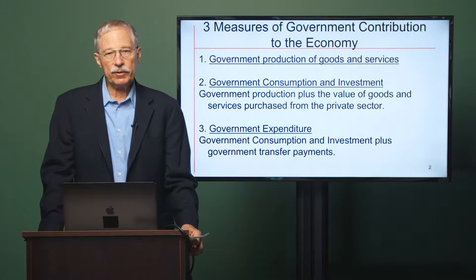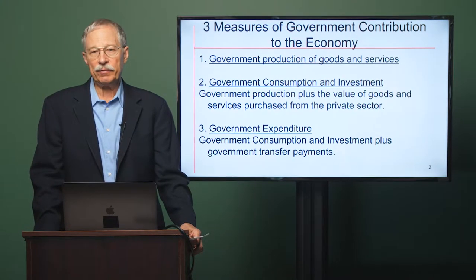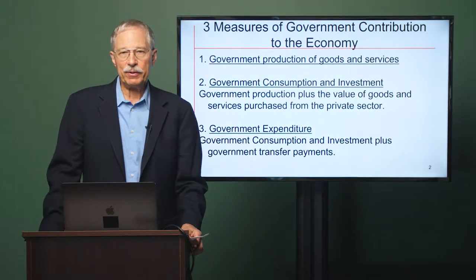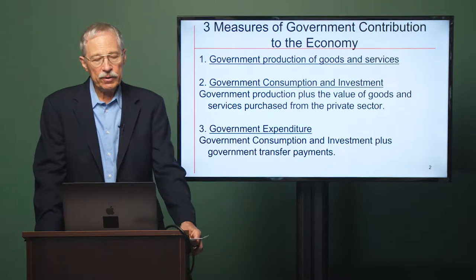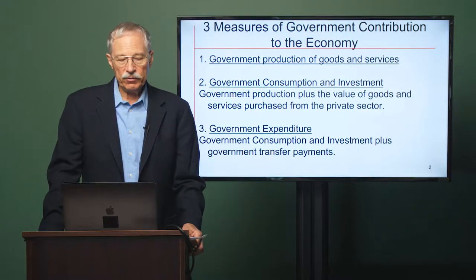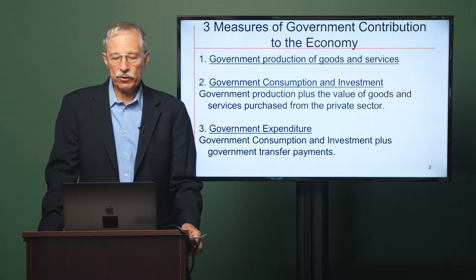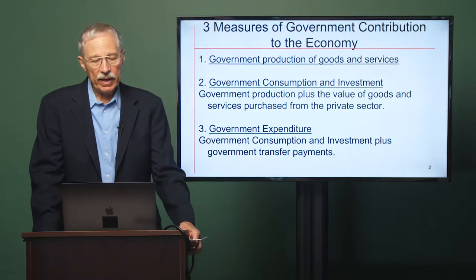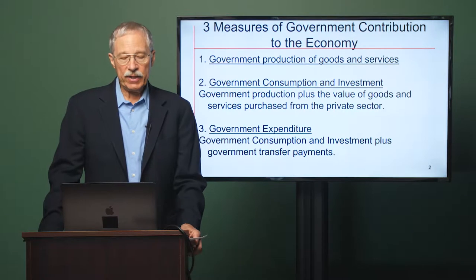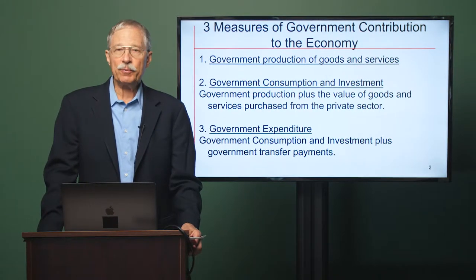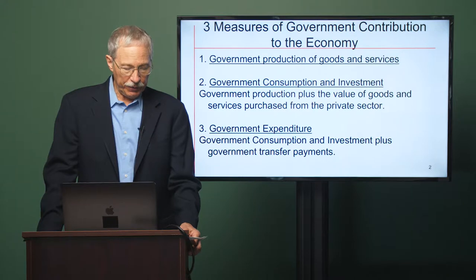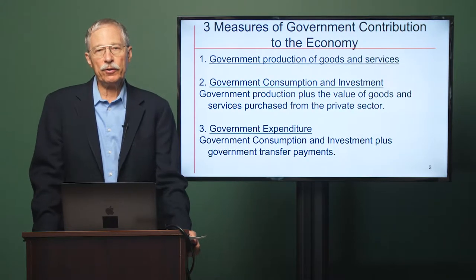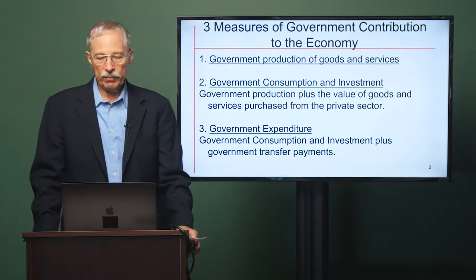That includes, for example, the weapons that the government purchases, the battleships, the aircraft carriers. The third measure of the government contribution is called government expenditure or spending. This adds to government consumption and investment the transfer payments that the government makes to people — for example, Social Security retirement pensions.